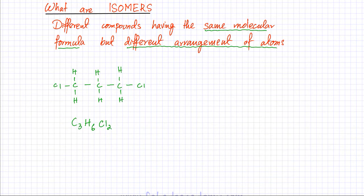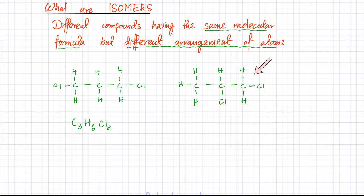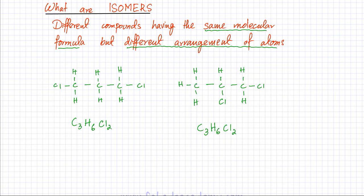I can draw an isomer which has three carbon atoms — the same number — with one Cl on the last carbon and one Cl in the middle, and the rest of the bonds are carbon bonding with hydrogen. If you count the atoms: three carbon atoms, six hydrogen atoms, and two chlorine atoms. So these two molecules are isomers of each other.